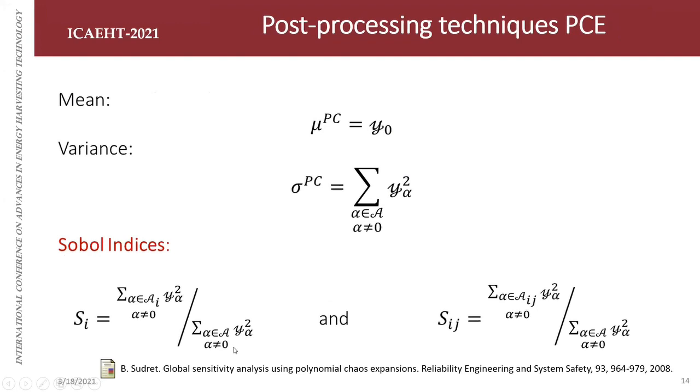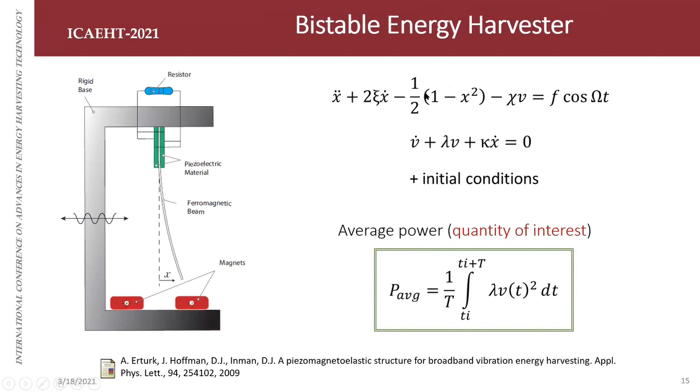After, we can calculate the Sobol indices by this equation: the first Sobol index is defined by all coefficients squared truncated by parameter i in ratio to the total variance. The second-order Sobol index is defined by this equation truncated by parameters i and j.